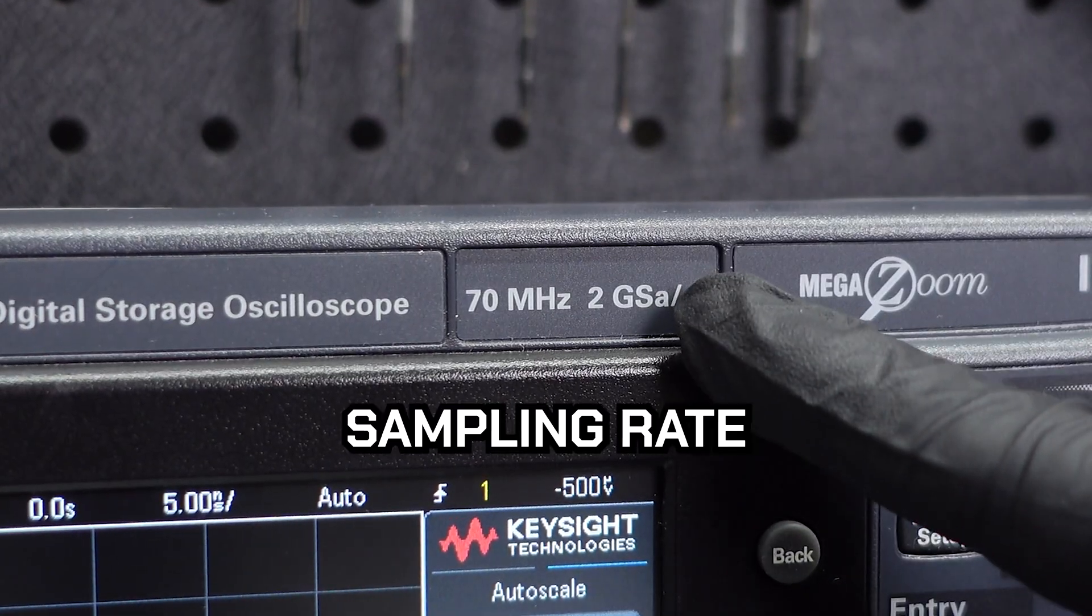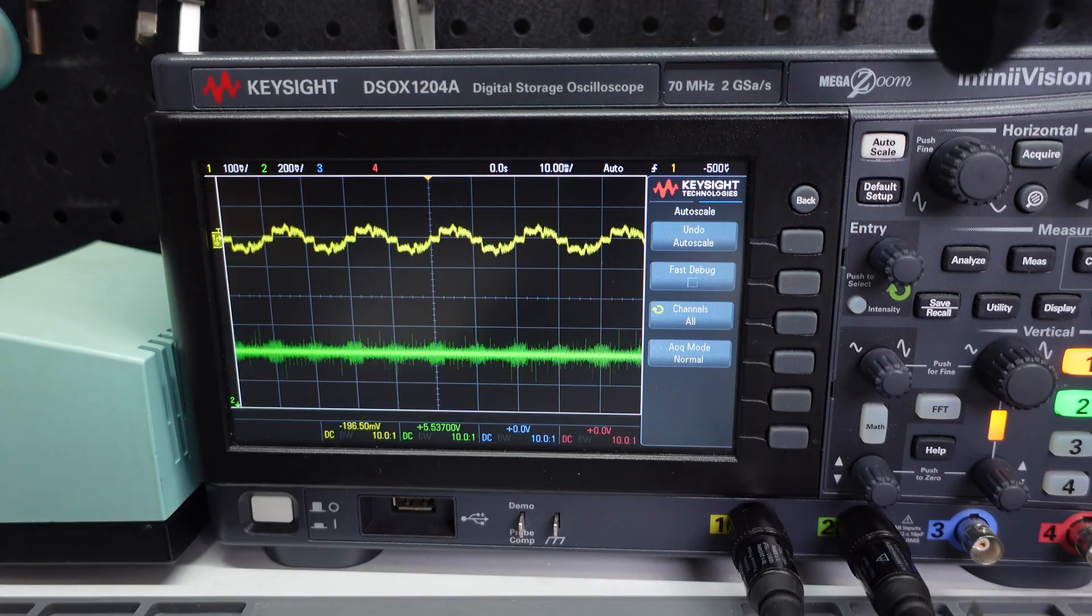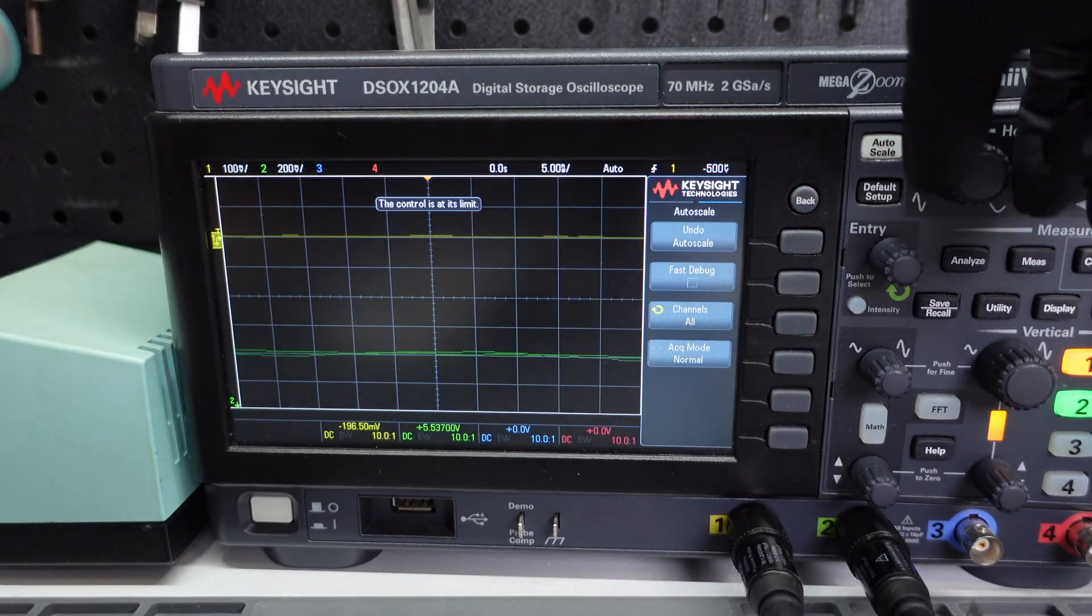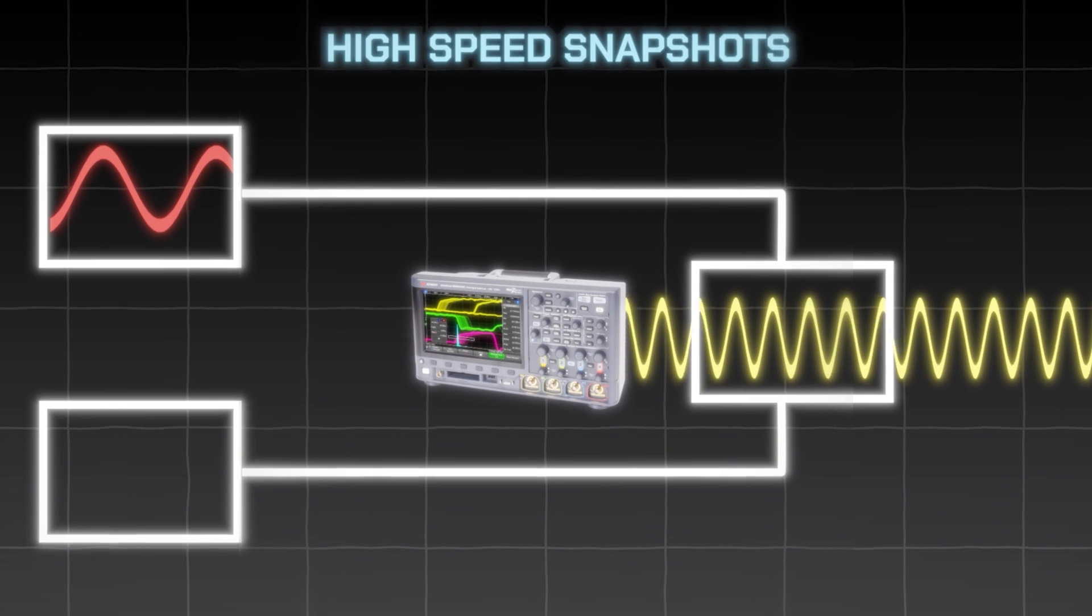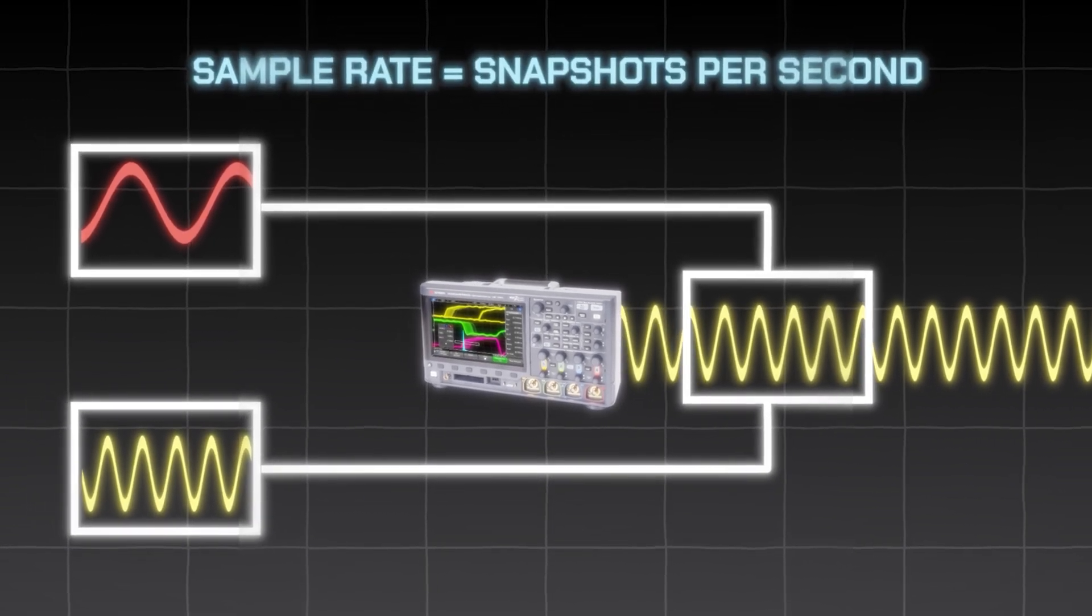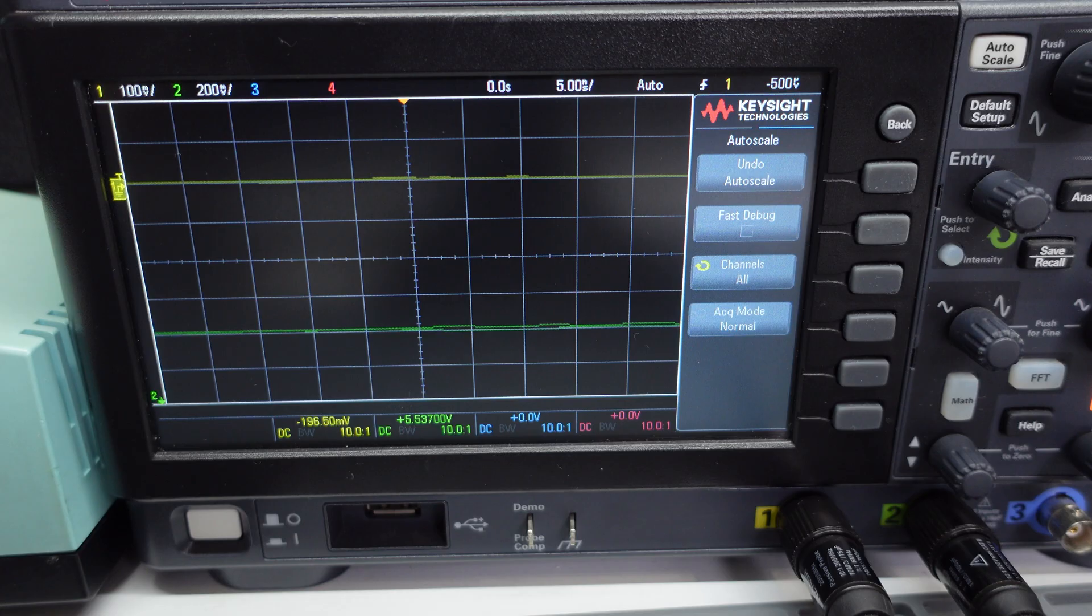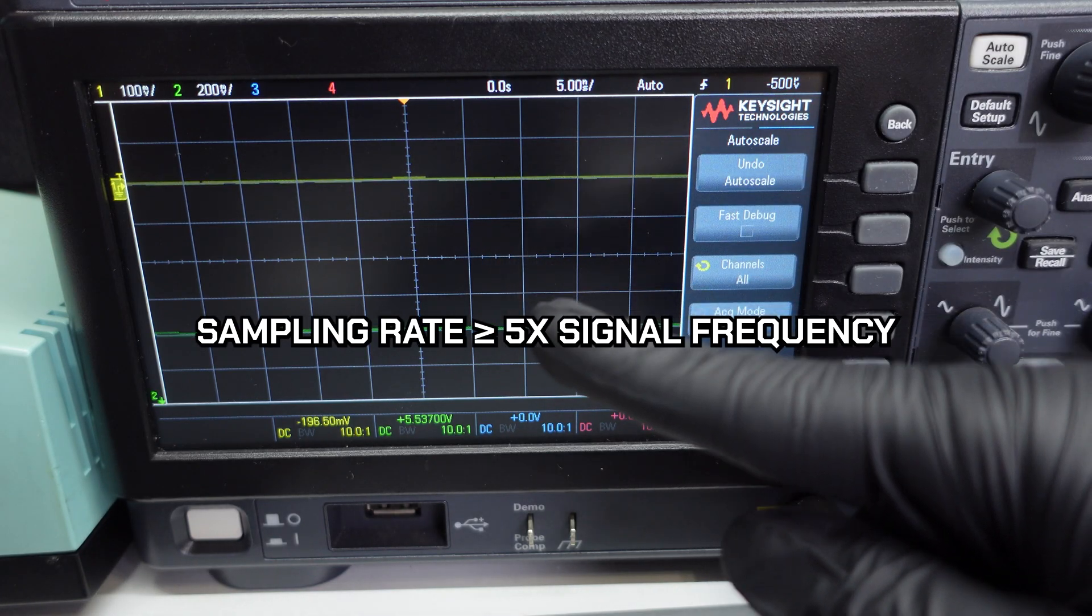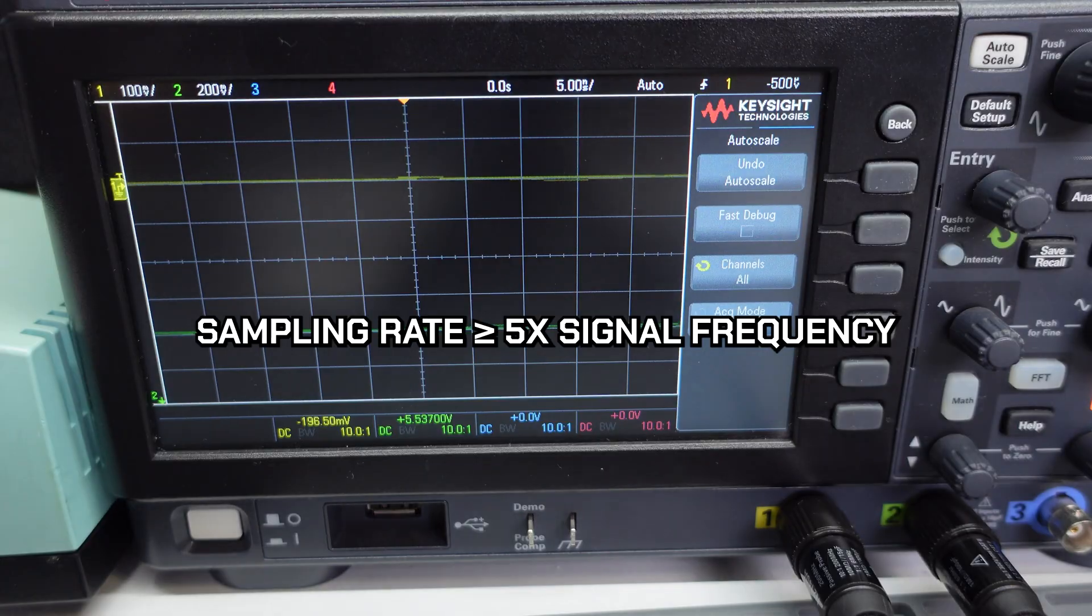Next is the sampling rate, which is kind of the camera FPS of oscilloscopes. Oscilloscopes don't measure signals continuously. Instead, they take tiny snapshots at really high speed. The sampling rate tells you how many snapshots it takes a second. And just like with the bandwidth, there's a rule of thumb. Your sampling rate should be at least 5 times higher than your signal frequency.